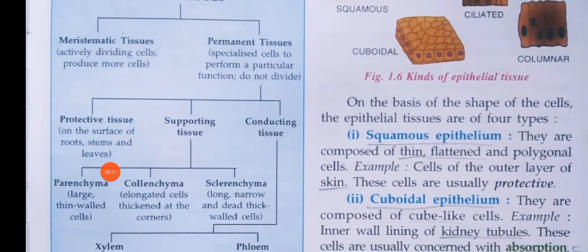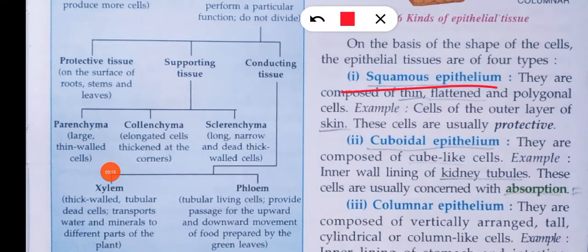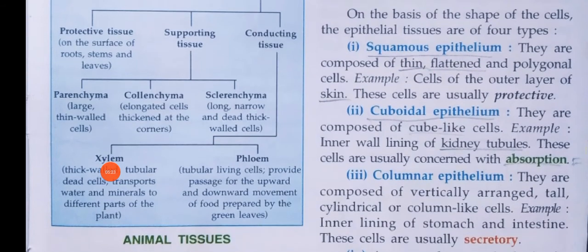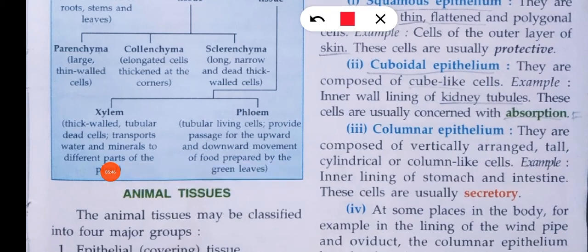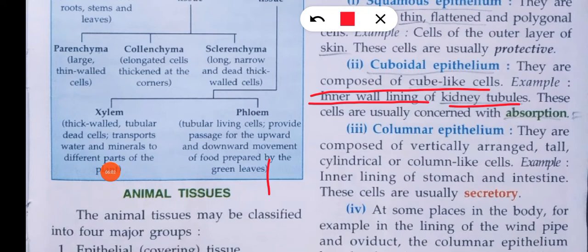Squamous epithelial cells are composed of thin, flattened, and polygonal cells. These form the outer layer of skin and are usually protective. Cuboidal epithelial cells are cube-like in shape. They are found in the inner wall lining of kidney tubules, and these cells are usually concerned with absorption. Cuboidal epithelium is cube-shaped and found in the kidney tubules.